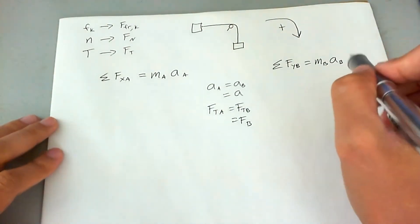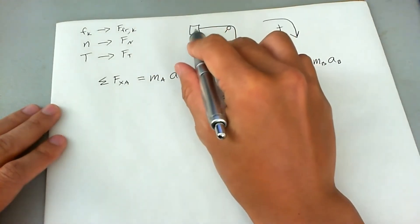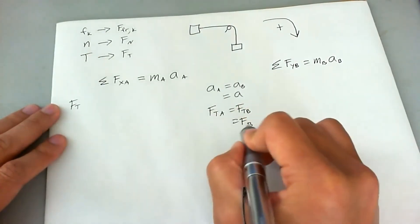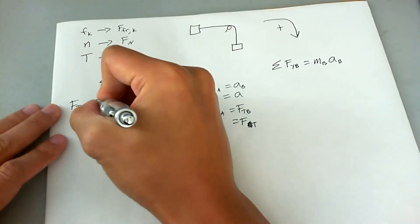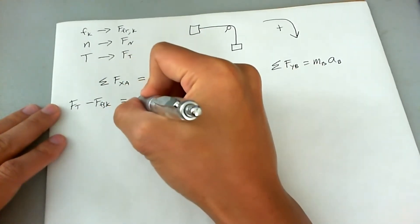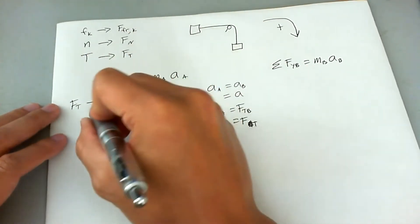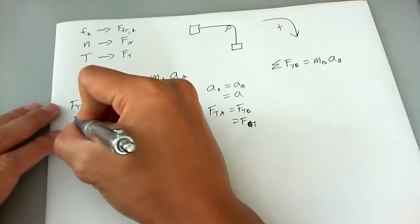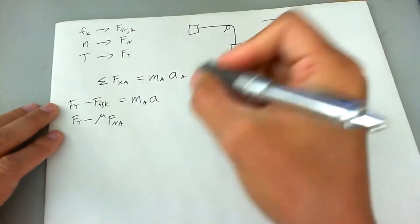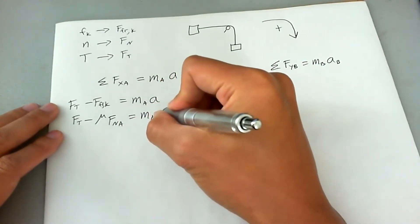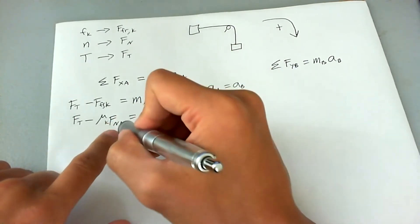The forces in the X direction for block A are two: tension and friction. So the force of tension minus the force of kinetic friction equals mass of block A times the universal acceleration. Breaking it down further: F_T minus mu_K times F_N of block A equals MA times A. The friction equation applies for both static and kinetic, but we specify this as kinetic mu.